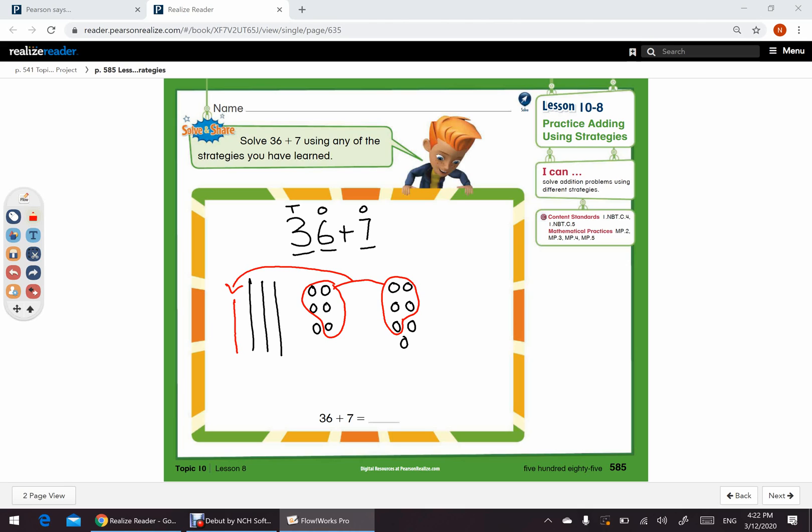So, we have how many 10's in all? 1, 2, 3, 4. We have 4 10's. And what are the remaining ones? 1, 2, 3. So, 36 plus 7 equals 43.